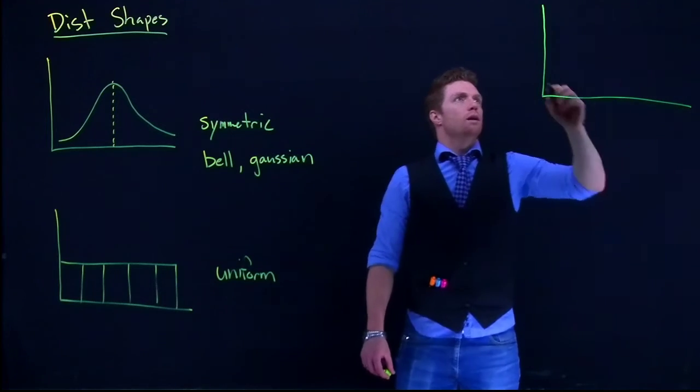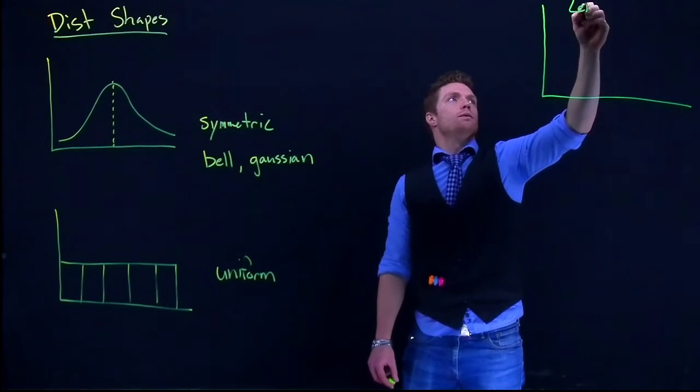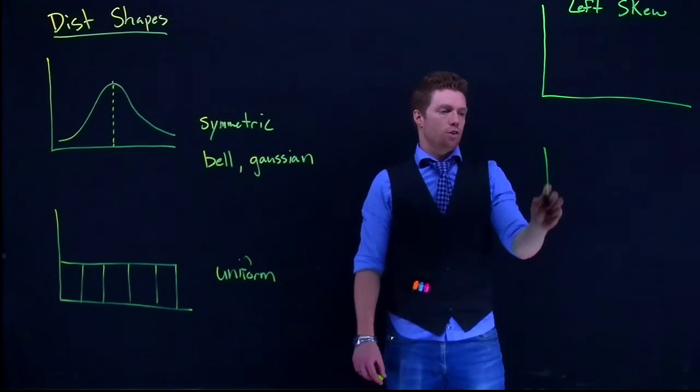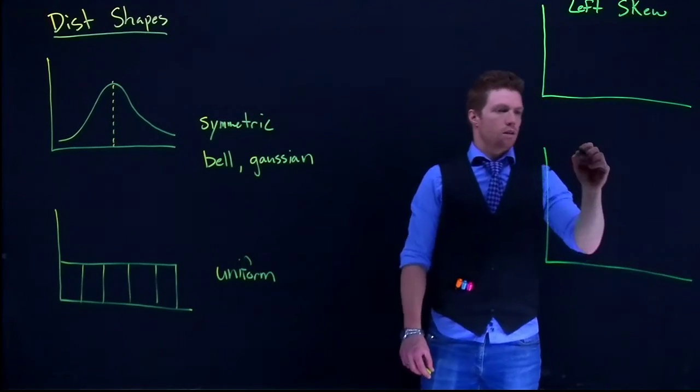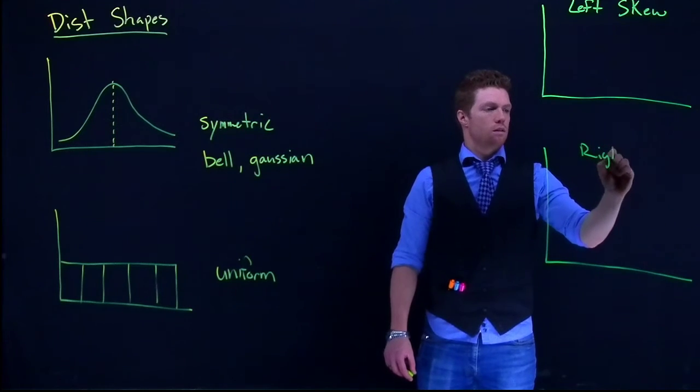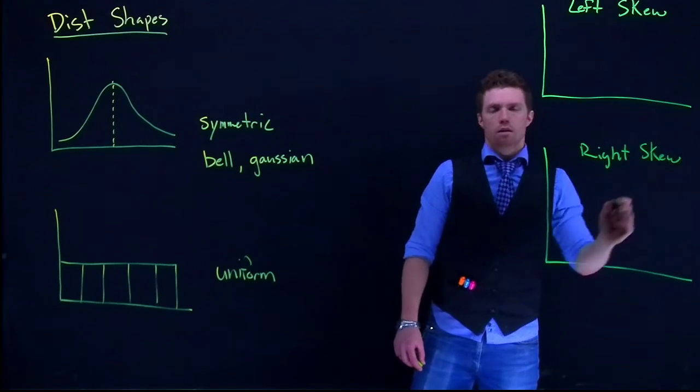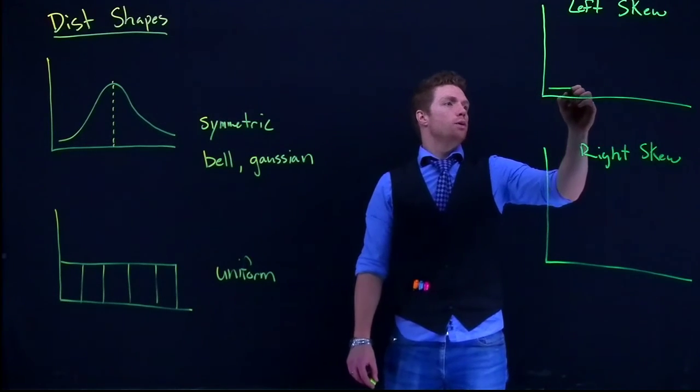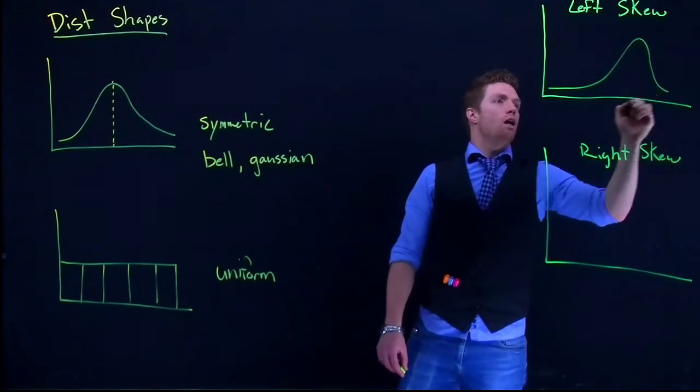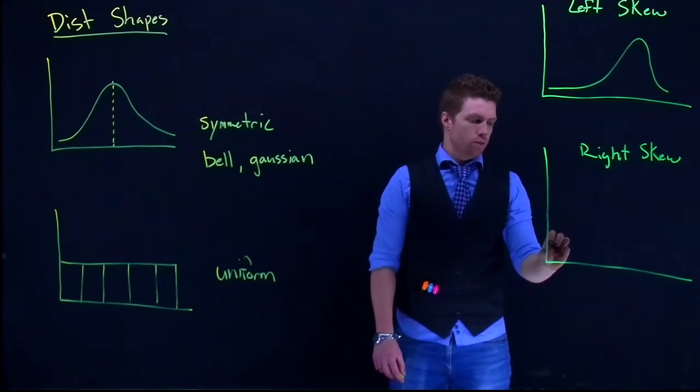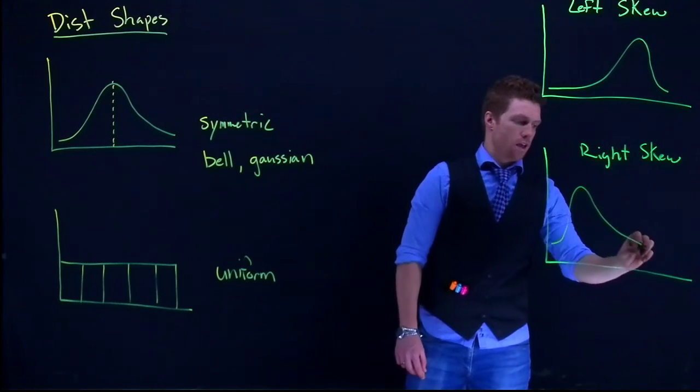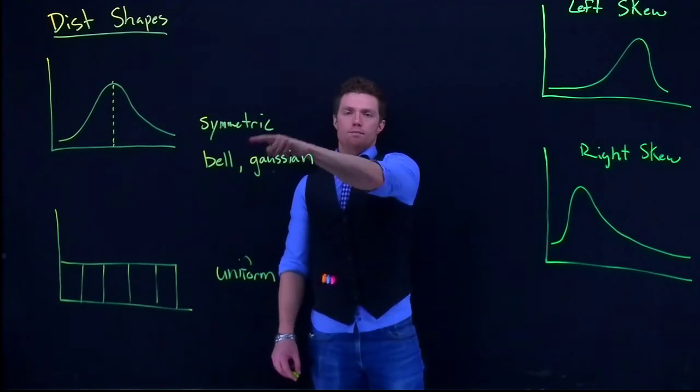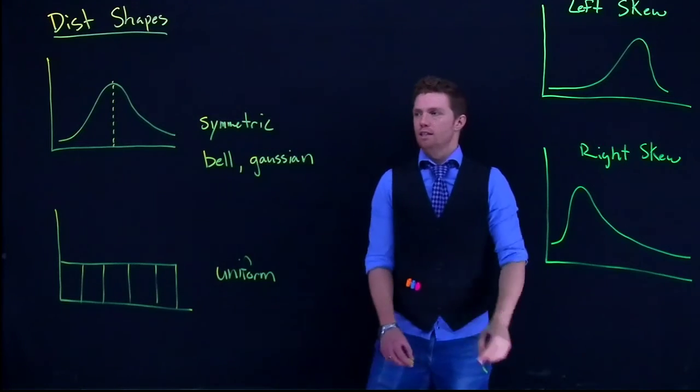We have a left skew. So we'll do this one as left skew. And we have what's called the right skew. Now it's really easy to tell which one is which. A left skew has the tail off to the left side and the right skew has its tail off to the right. And so those come from this normal distribution.